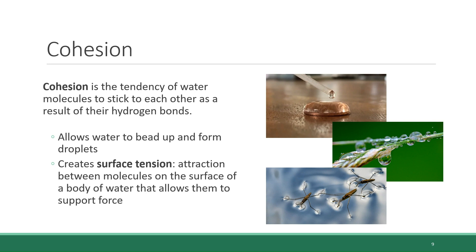And cohesion also creates surface tension in water. Surface tension is an attraction between molecules on the surface of a body of water that allow them to support force. Not a lot of force, mind you, but some force. The fact that certain insects are able to stand on the surface of a body of water and remain supported there, as you can see in this image, is a result of water surface tension.